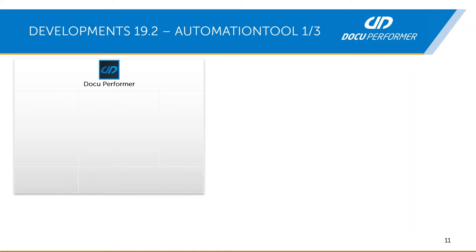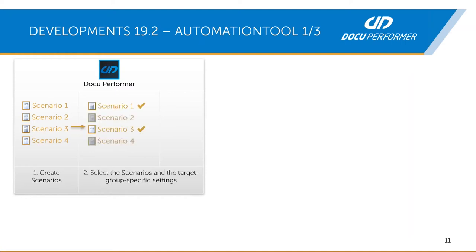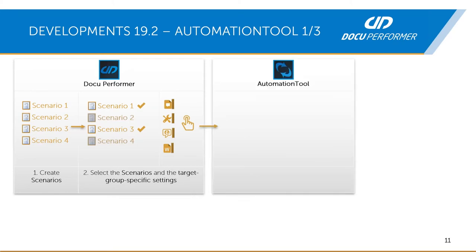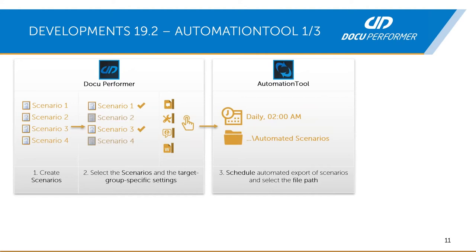On the left side you have the DocuPerformer, where you can create scenarios if you license the commenting module. You can then select the scenarios which should be exported automatically in the background, along with target-group-specific settings such as the settings variant, comment variant, language, or Word template. You can also select one scenario more than once, and then go to the automation tool to select the export time and the file path where the documentation should be stored.